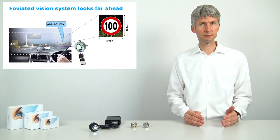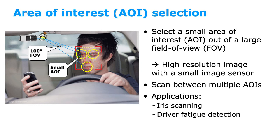Also inside a car, area of interest selection would be beneficial too. For example, scan between multiple areas of interest and take high resolution images. Applications are iris scanning or driver fatigue detection.